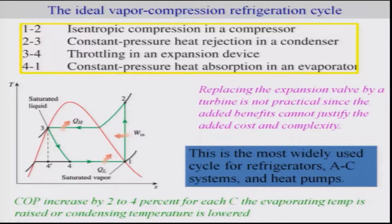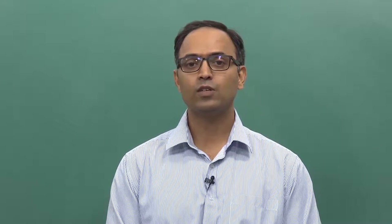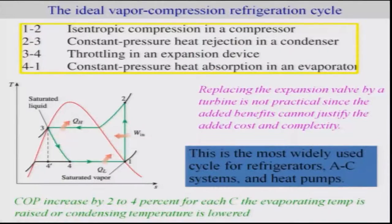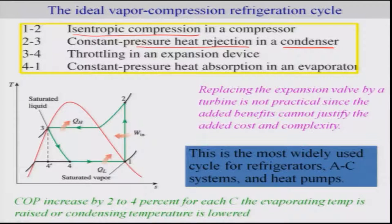To summarize: we vaporize the refrigerant completely before it enters the compressor, then undergo isentropic compression. On a T-S diagram, process 1-to-2 is isentropic compression, followed by constant pressure heat rejection in the condenser (process 2-to-3), reaching saturated liquid. Then it undergoes a throttling process 3-to-4 in the expansion device, followed by constant pressure heat absorption in the evaporator (process 4-to-1).